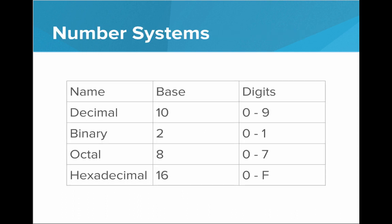So these are all the number bases we should be familiar with. We know the decimal numbering system — that's base 10, digits 0 through 9. Then there's binary, which is base 2, using digits 0 and 1. Octal is base 8, digits 0 through 7. And hexadecimal is base 16, using digits 0 through F.